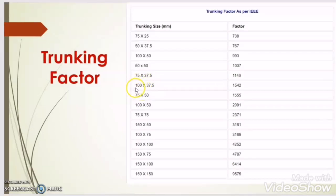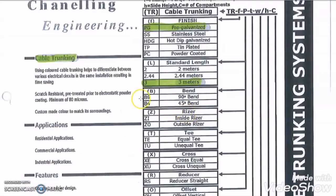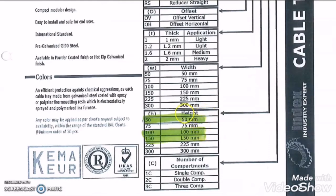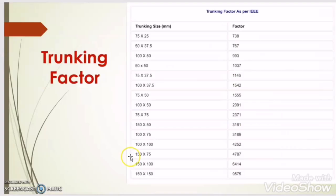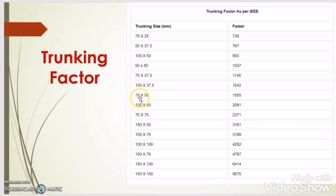But I cannot choose a trunking of size 100 x 37.5, because in my project the approved trunking is pre-galvanized type with heights of 50mm, 100mm, and 150mm. I cannot go for a trunking with a height of 37.5mm. In that case I will go for the next higher size trunking. Since 75 x 50 is approved in my project — the height of 50mm is approved — I will select the trunking size of 75 x 50. Hope you understood this.